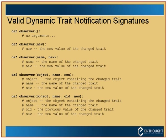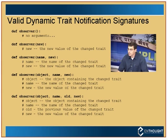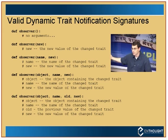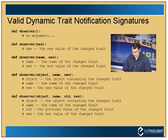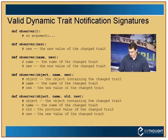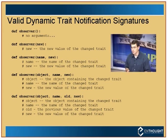Dynamic listeners have slightly different notification signatures. You can define the handler with no arguments; with just the new value; with name and new value; with the object and name and new value; or the full signature of object, name, old, new — giving all the same information available to static trait change handlers.